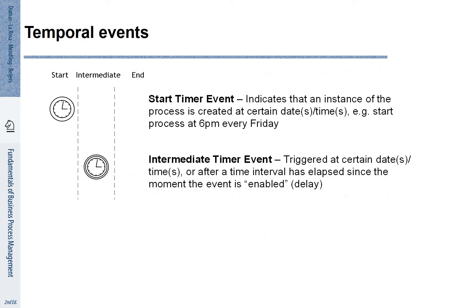We can also use events to refer to time. Very often we can use start timer events to indicate when a new process starts. It may be the case that we trigger a new process every day in the morning, every week, every month, or potentially once per year. We can also use intermediate time events. These can be used to refer to the elapse of a certain interval of time or a specific reference point in time. We will see an example.